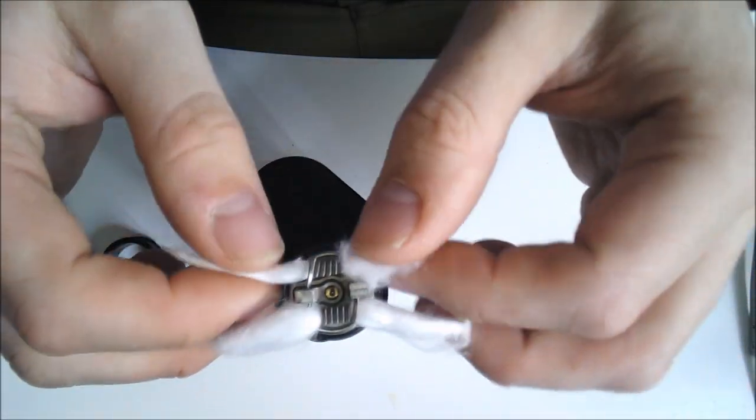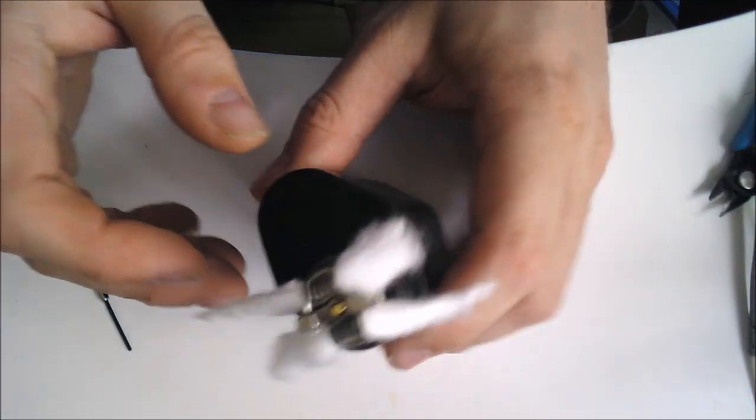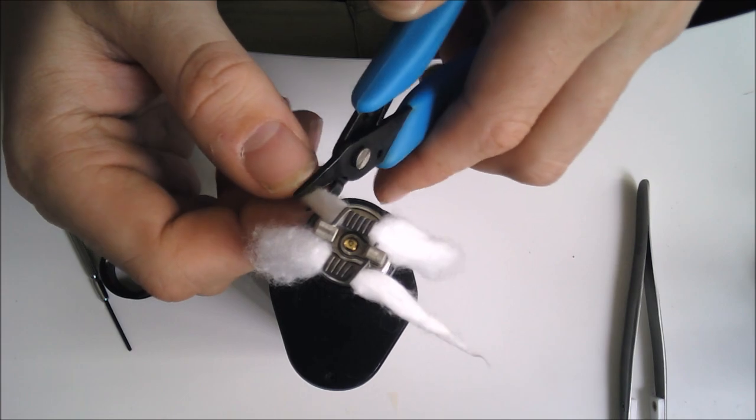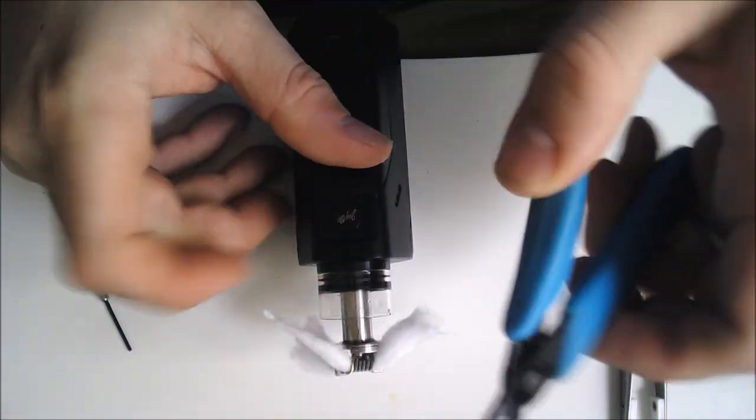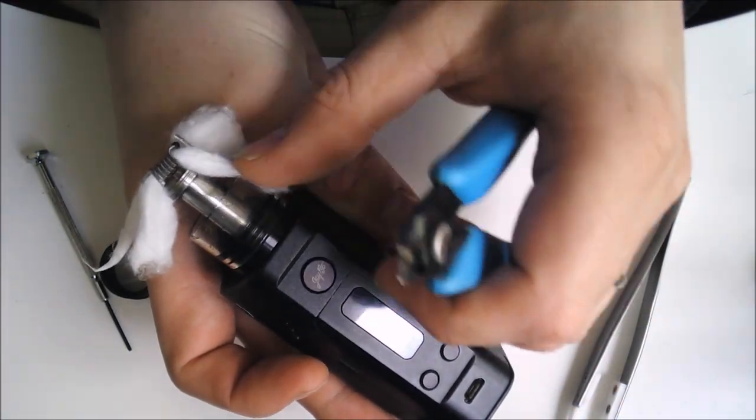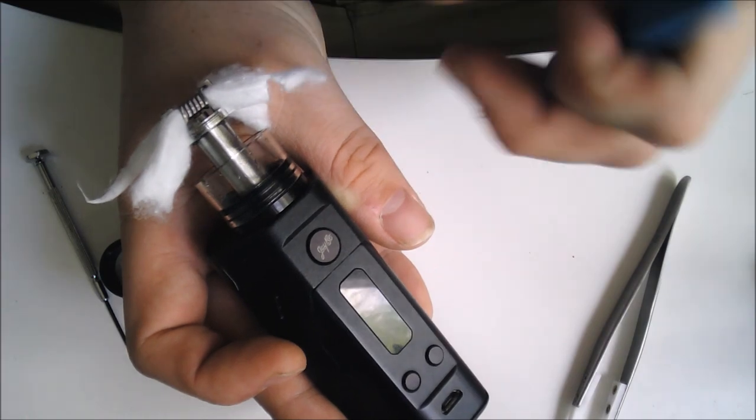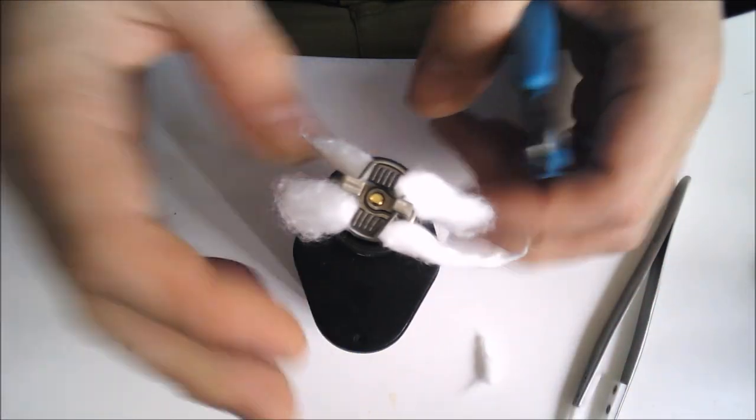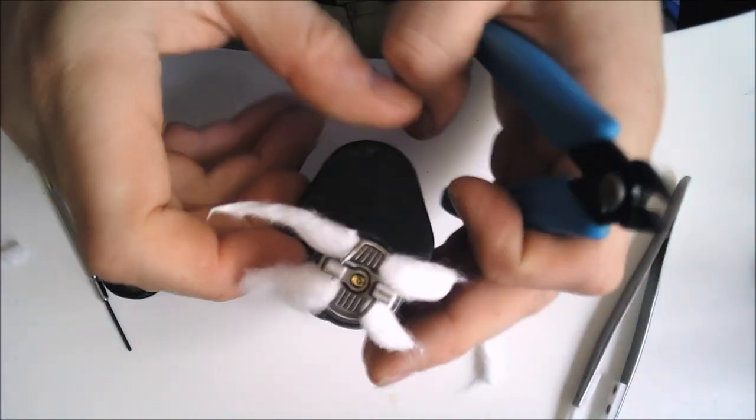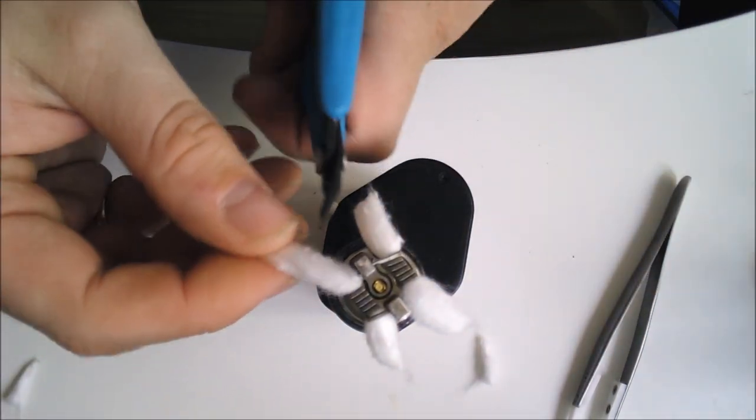The wicking on this RDTA is the key bit. That might not be quite enough, but what I then like to do is measure it down to about where the cotton hits the side of the tank section, and give it a little trim there. Then we do the same all around, making sure that it's nice and even, not too long but not too short.